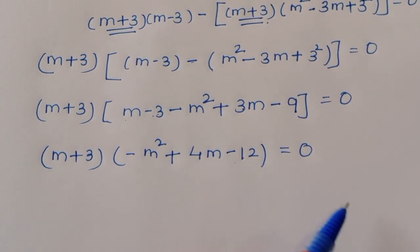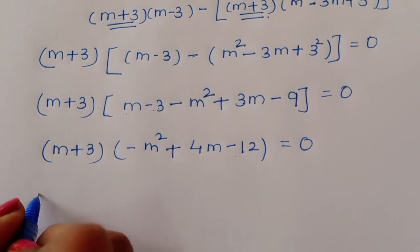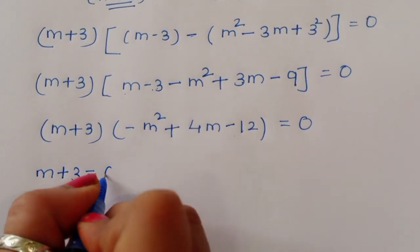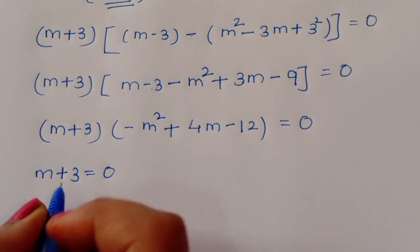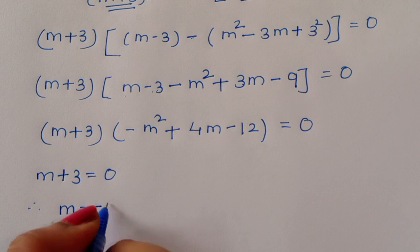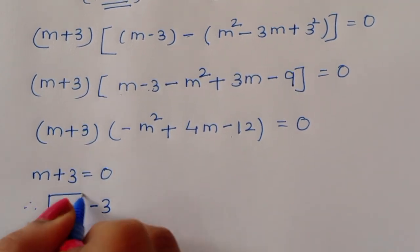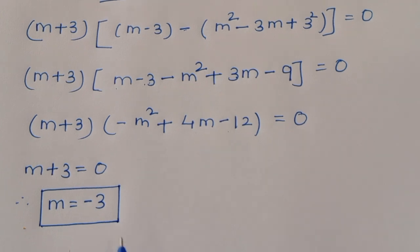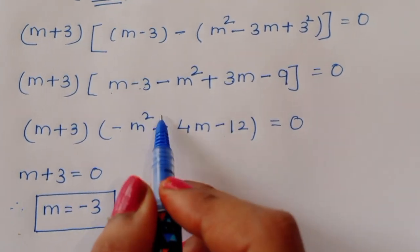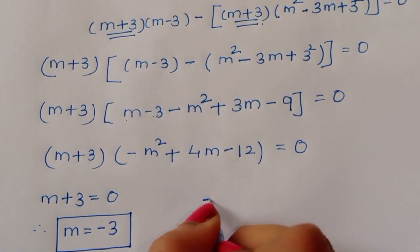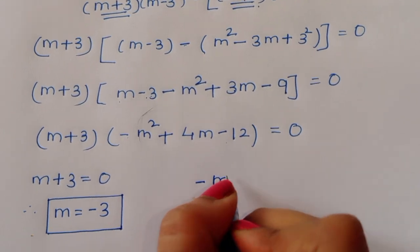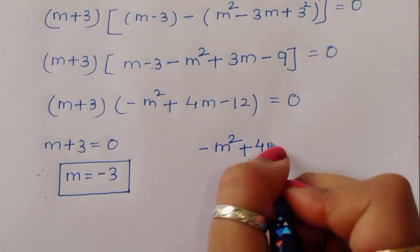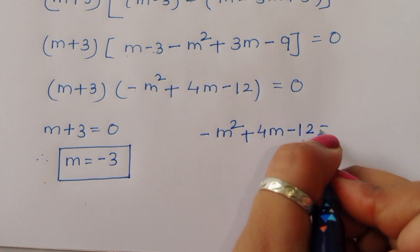Now we get two equations: first, m plus 3 equals 0, and second, minus m squared plus 4m minus 12 equals 0. From the first equation, m plus 3 equals 0, therefore m equals minus 3. This is the first value of m.